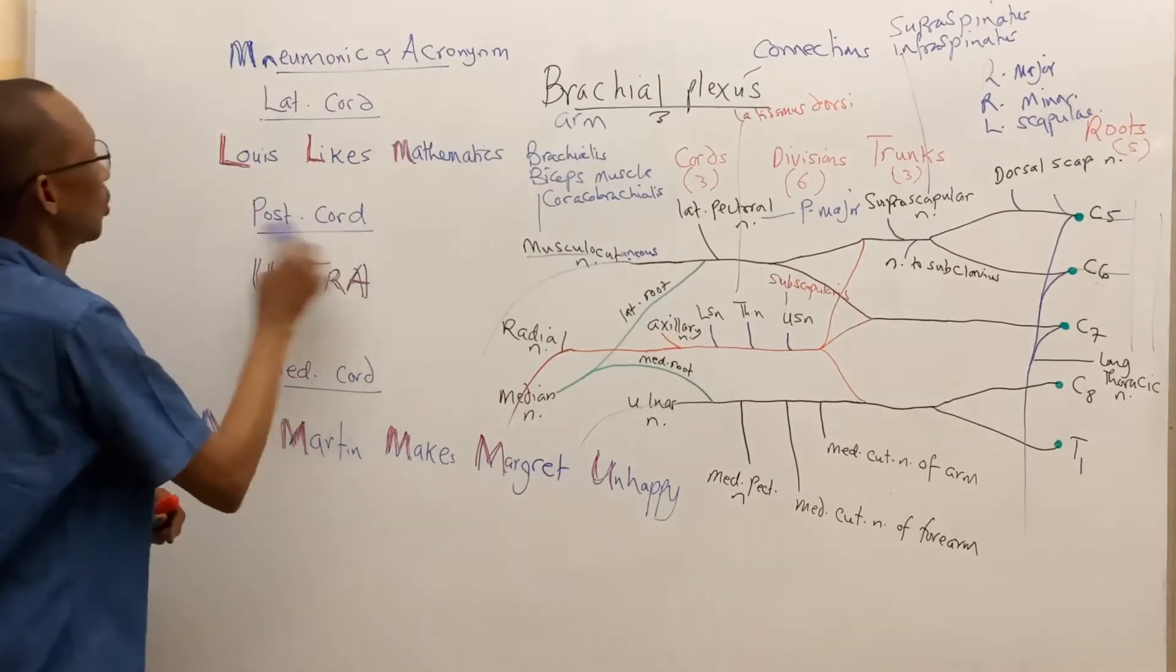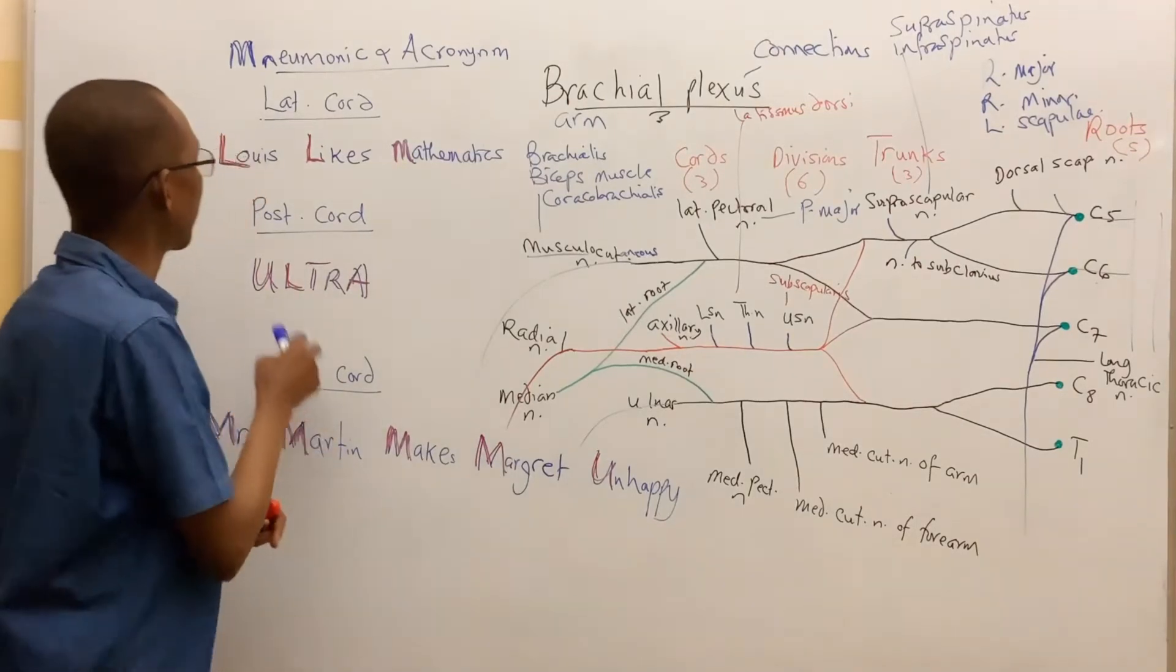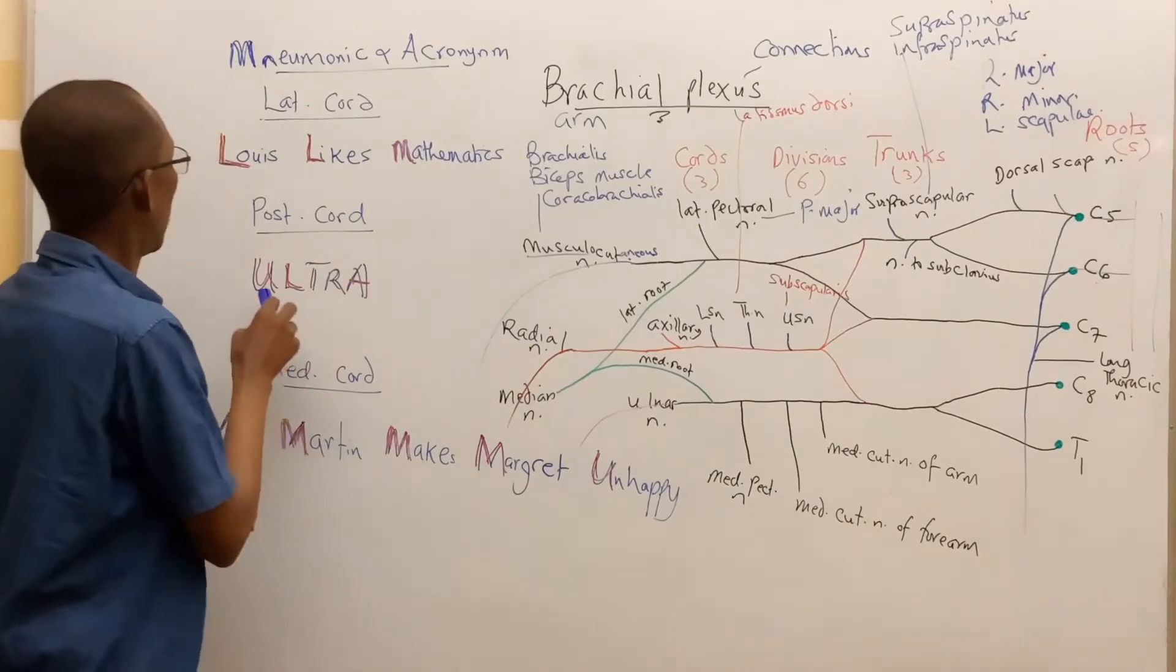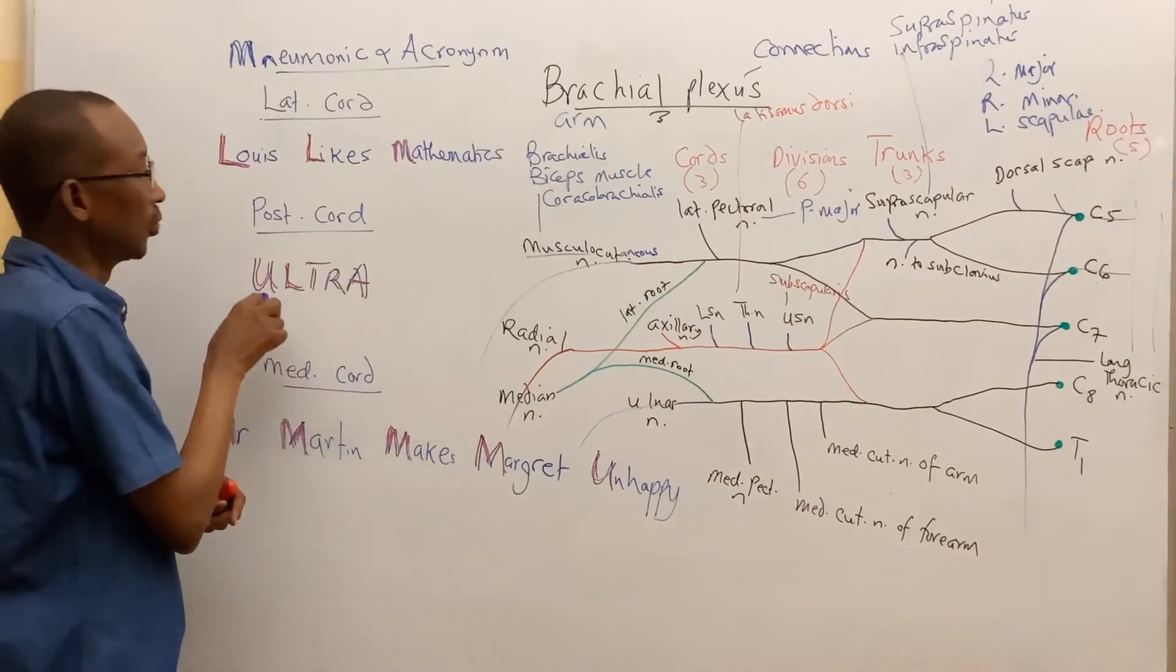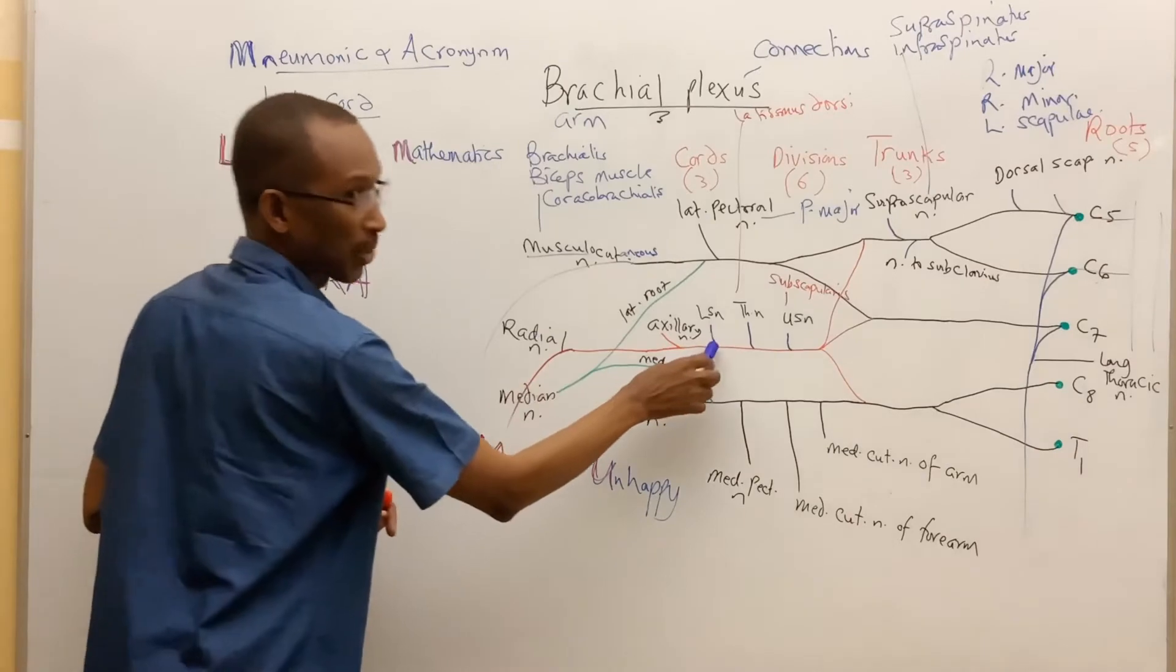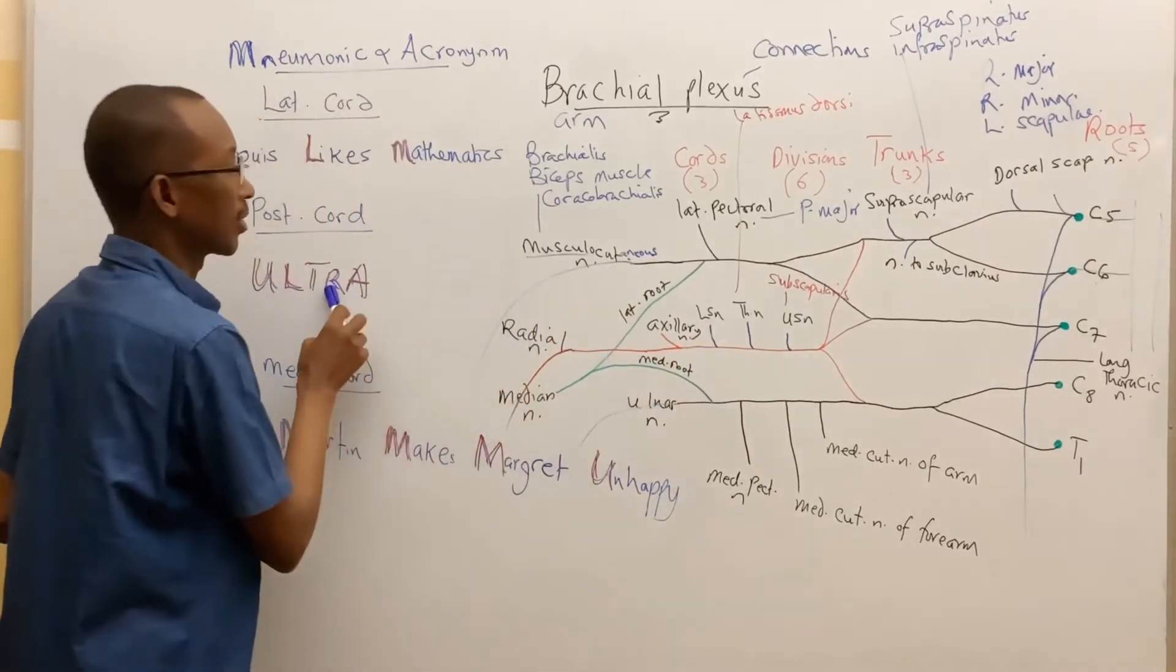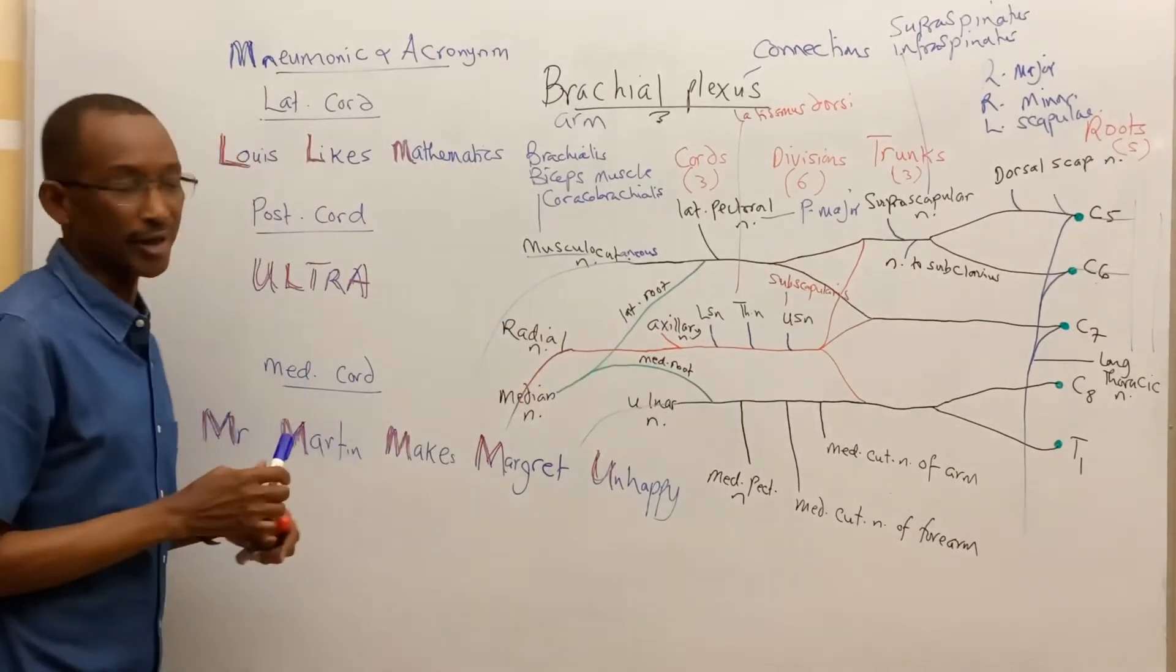On the posterior cord, we don't have a mnemonic but rather a simple acronym known as ULTRA. So ULTRA is spelled as ULTRA: U for upper subscapular nerve, L for lower subscapular nerve, T for thoracodorsal nerve, R for radial nerve, and A for axillary nerve.